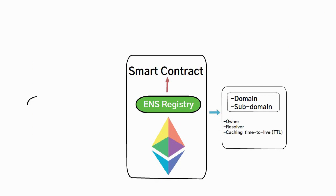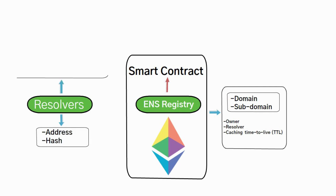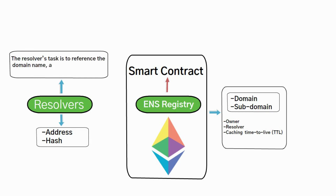The second important component are the resolvers, which are the actors responsible for translating the ENS domain names into the underlying referenced address or hash. The resolver's task is to reference the domain name and then respond with the resource wallet address.